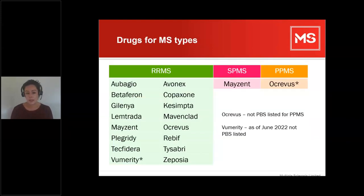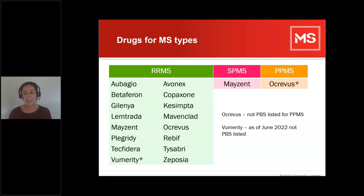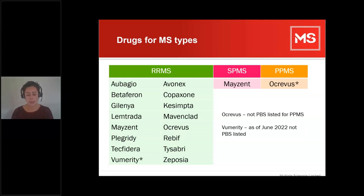Most people — about 85% — are diagnosed with relapsing remitting MS, so most drugs are for that type. Ocrevus appears twice because it's proven beneficial for both relapsing remitting and primary progressive MS, although it is not PBS listed for primary progressive — at least one submission to the PBAC has been denied. For secondary progressive MS, we just have the one option, which is Mayzent.